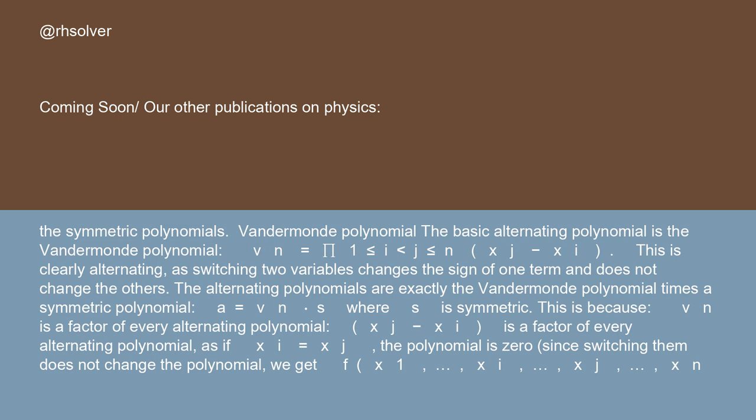Vandermonde polynomial: the basic alternating polynomial is the Vandermonde polynomial. V_n equals the product over 1 ≤ i < j ≤ n of (xj minus xi). This is clearly alternating, as switching two variables changes the sign of one term and does not change the others. The alternating polynomials are exactly the Vandermonde polynomial V_n as a factor of every alternating polynomial.